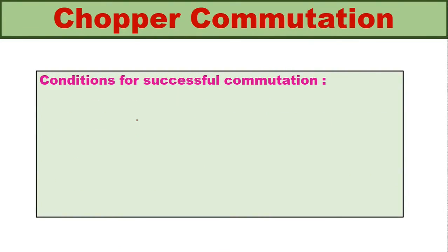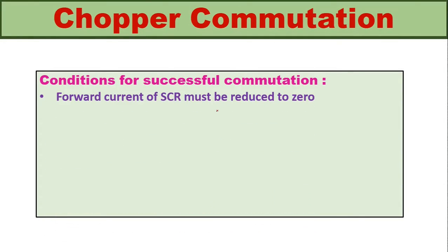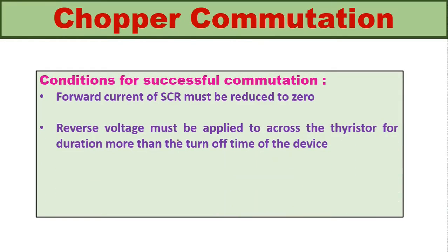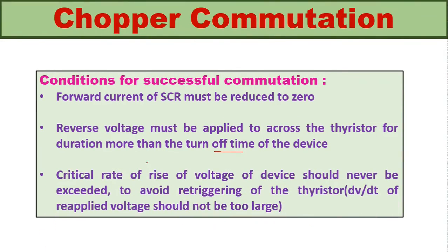The conditions for successful commutation are: first, the forward current of the SCR must be reduced to zero; second, a reverse voltage must be applied across the thyristor for a duration greater than the turn-off time of the device; and third, the critical rate of rise of voltage (dV/dt) of the reapplied voltage should never be exceeded, to avoid re-triggering of the thyristor.